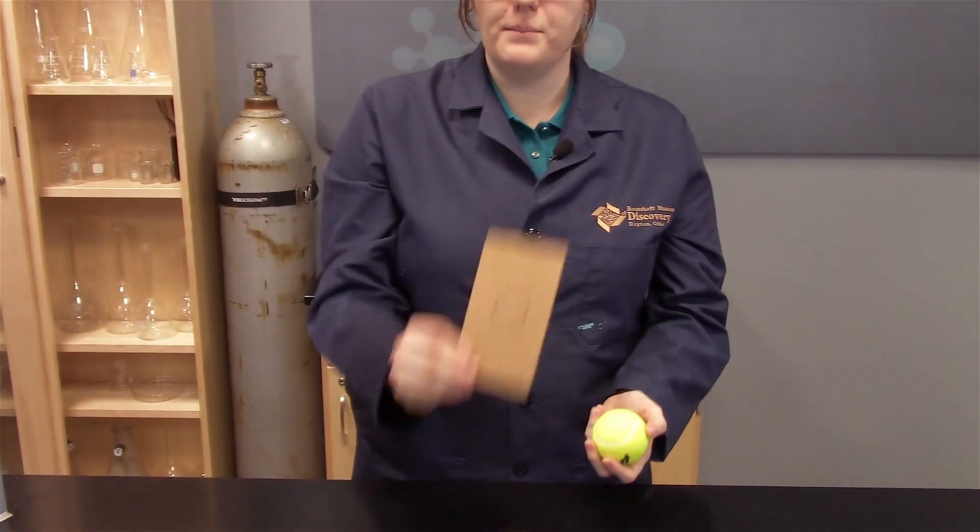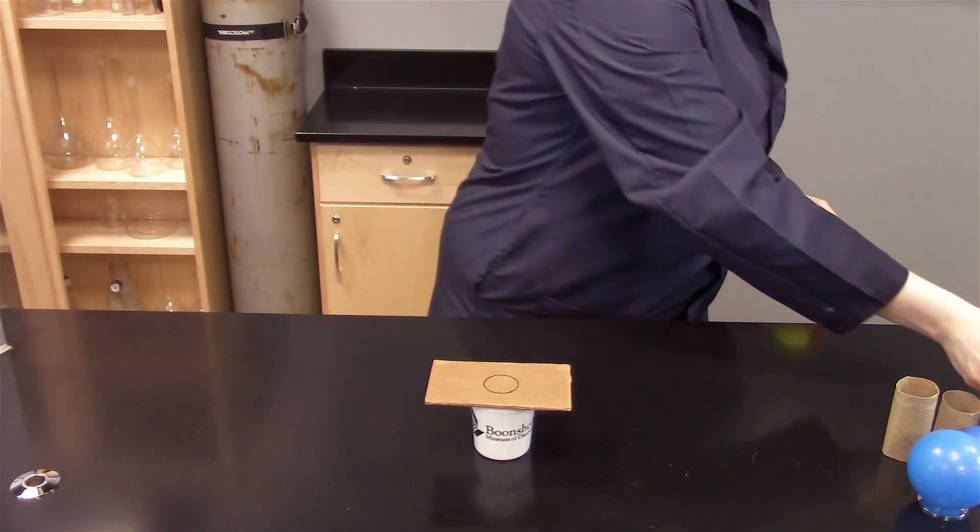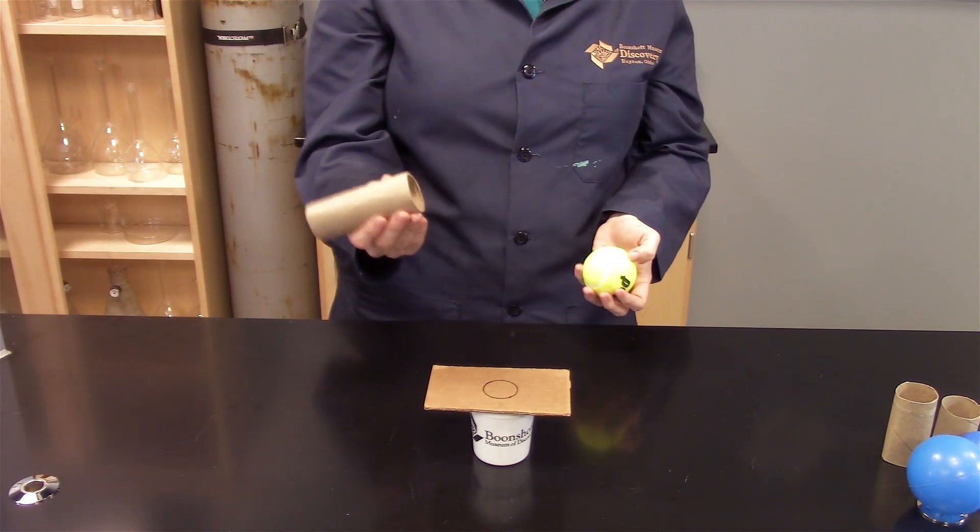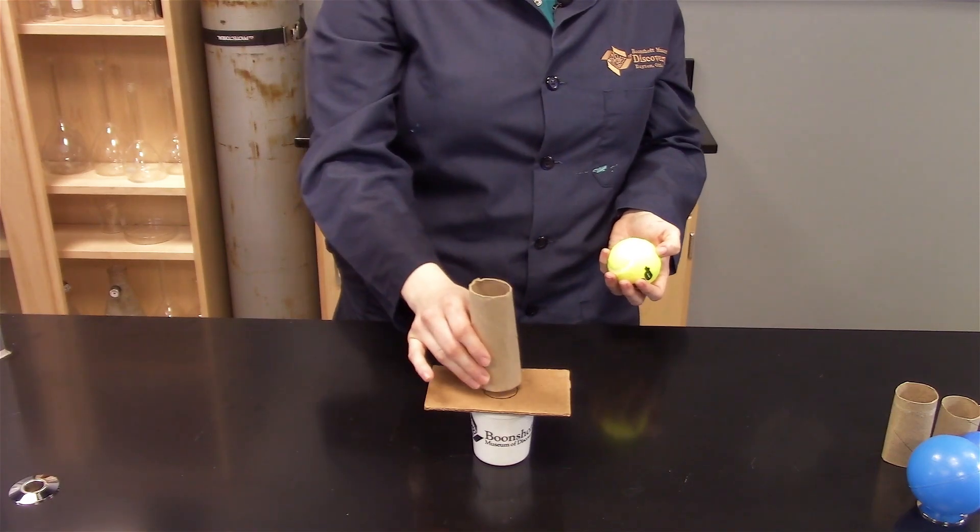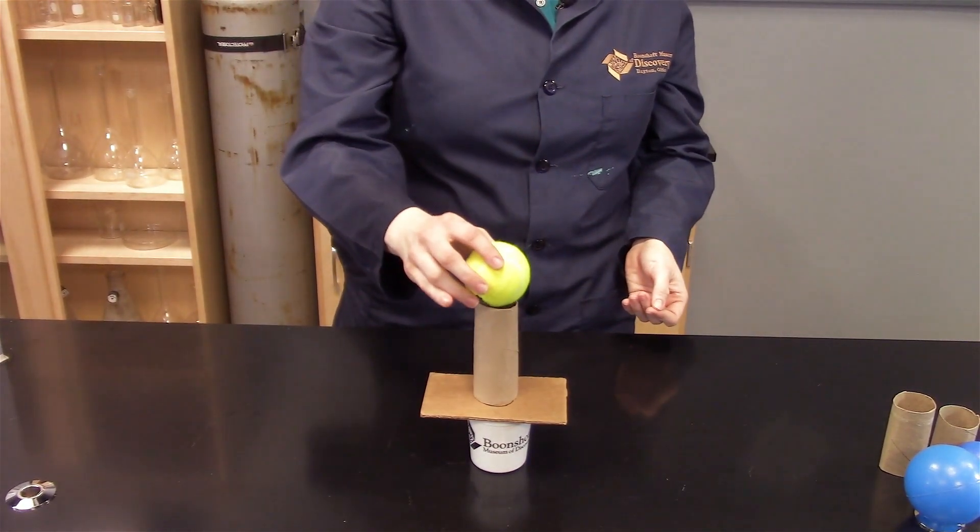So I'm going to have my cup here. I'm going to have a piece of cardboard. I'm going to place that cardboard onto the cup and I have a toilet paper tube. You can also use a paper towel tube, cut it down to whatever size you would like and place it on top of the cardboard. And now the ball goes on top.